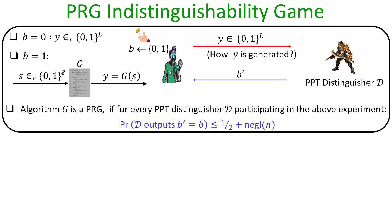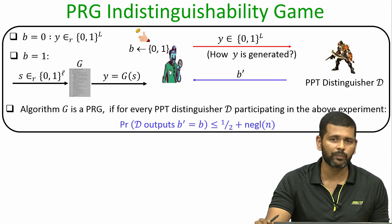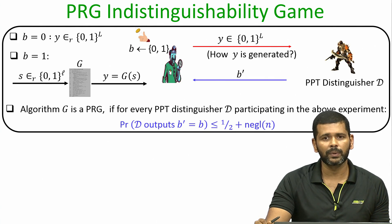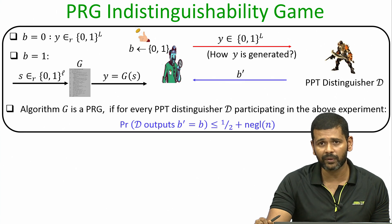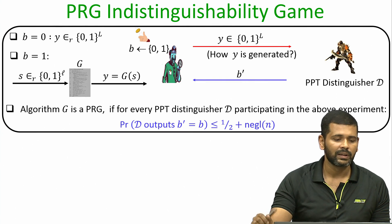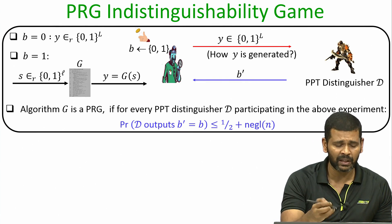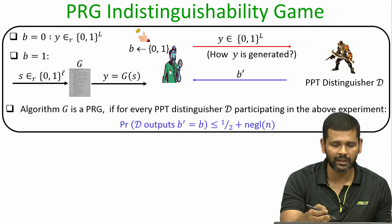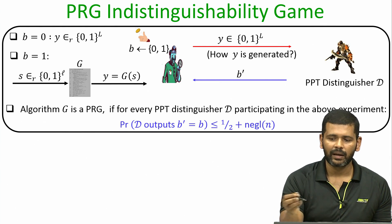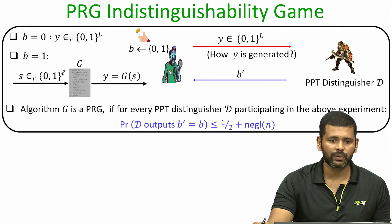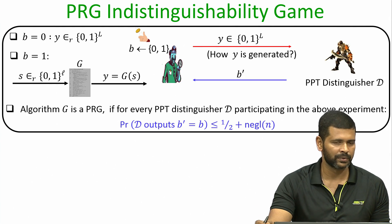A description of the algorithm G is publicly known, as per Kerckhoff's principle — we never assume the steps of the algorithm are hidden. What is hidden from the adversary in the experiment is the seed with which the verifier invoked algorithm G, and the goal of the distinguisher is to determine whether Y was generated randomly or by running the pseudo random generator.